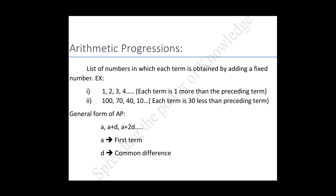An arithmetic progression is a list of numbers in which each term is obtained by adding a fixed number to the preceding term, except the first term. The fixed number is called the common difference of an arithmetic progression. It can be positive, negative, or zero.